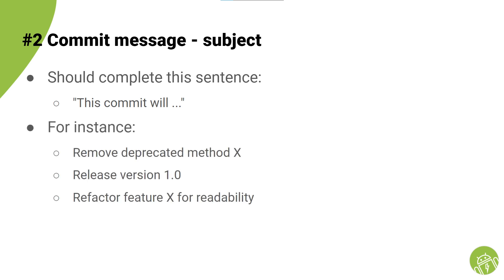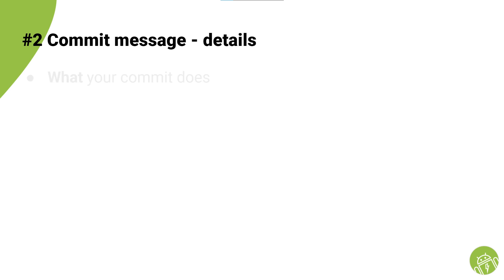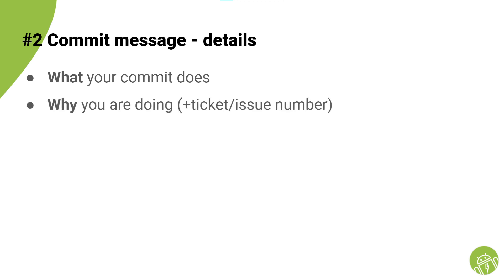For instance: 'remove deprecated method X', 'release version 1.0', 'refactor feature X for more readability'. The detail part should include what your commit does, why you are doing it (like a ticket or issue number), and how it is done. Your team may also agree on a predefined template for both commit messages and pull requests that you can add to your project git repo.